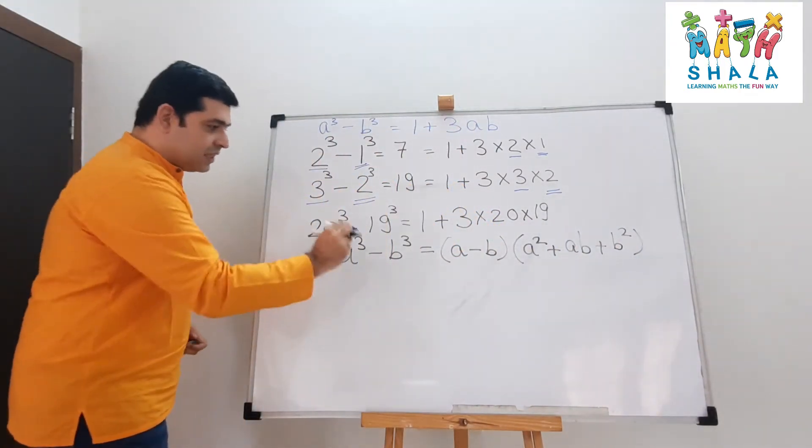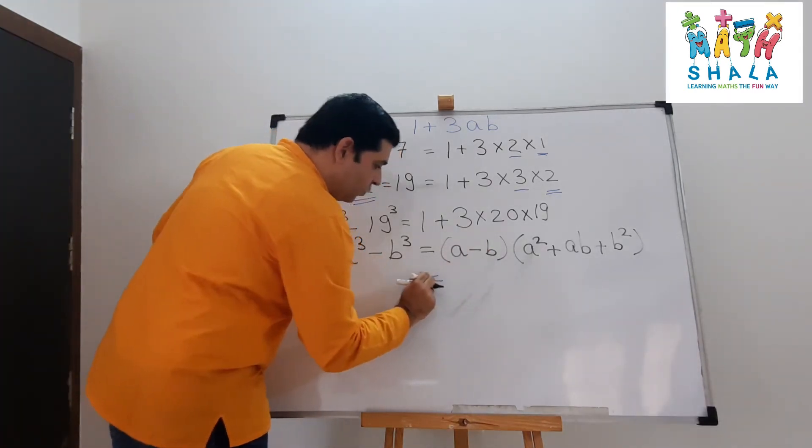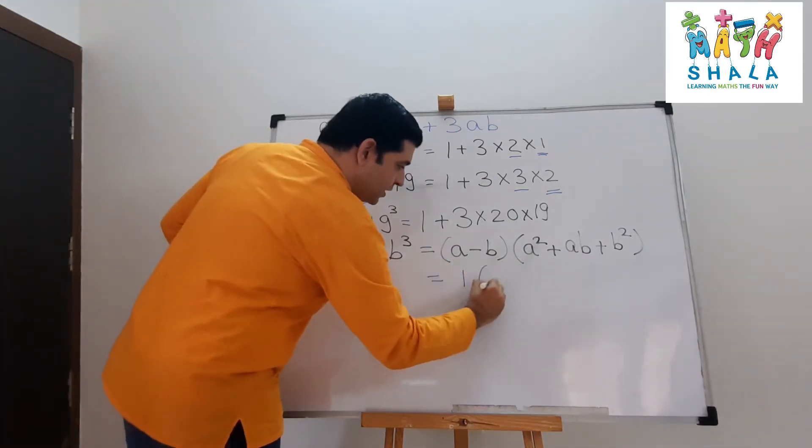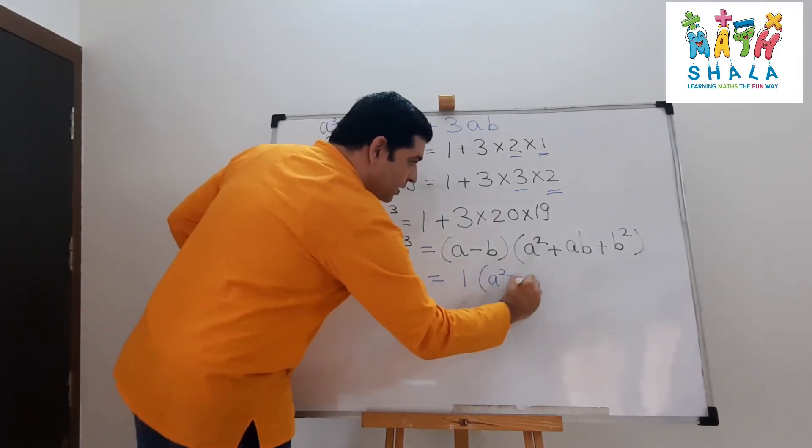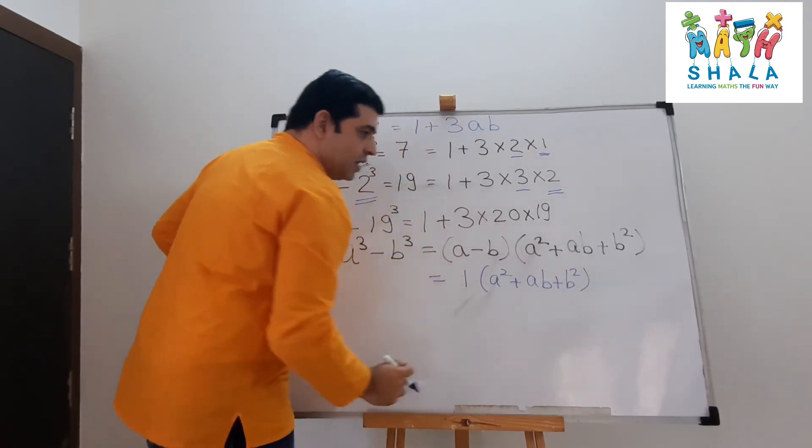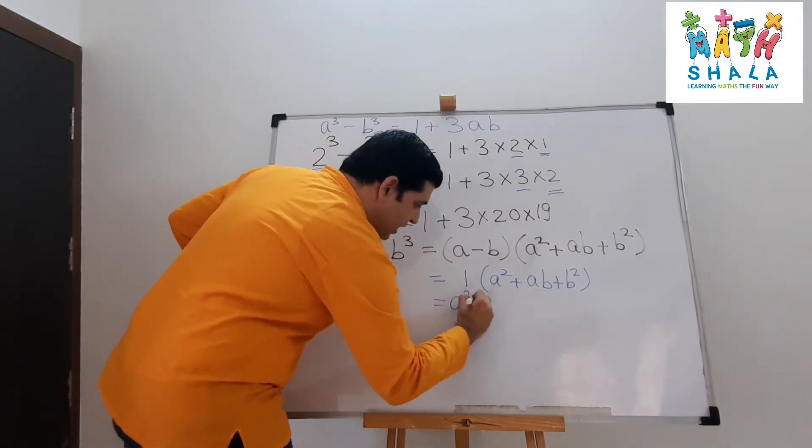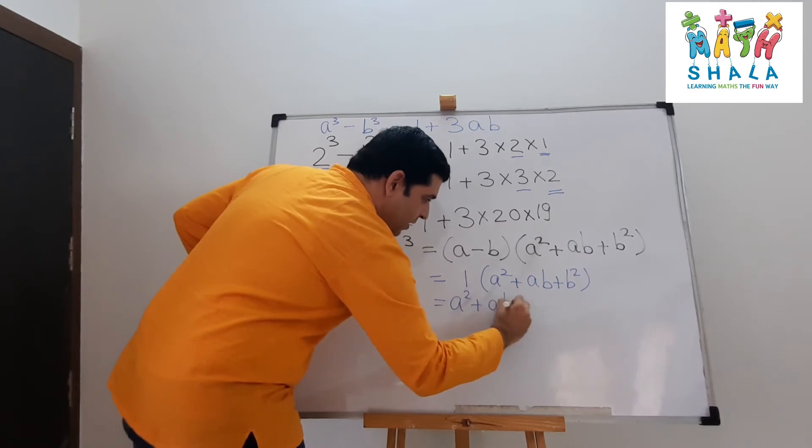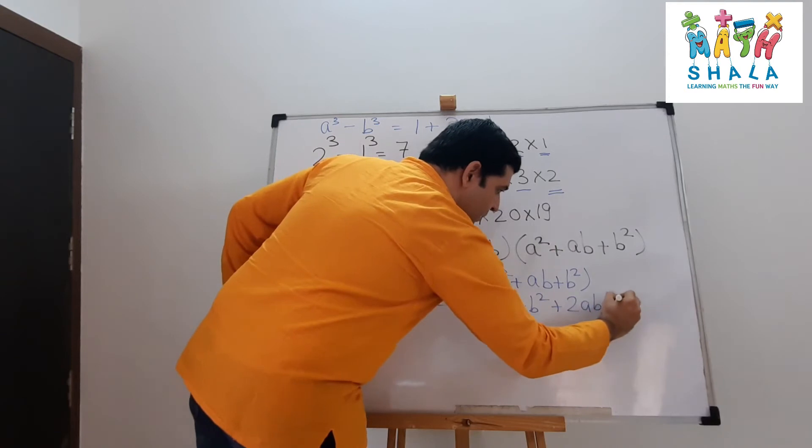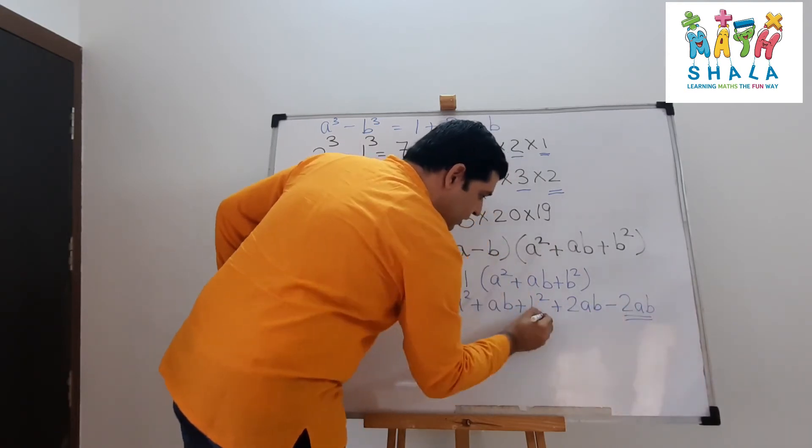Since it's a difference between two consecutive numbers, a minus b would always equal 1. So what is remaining is a square plus ab plus b square. Now in this, can I say a square plus ab plus b square plus 2ab minus 2ab?